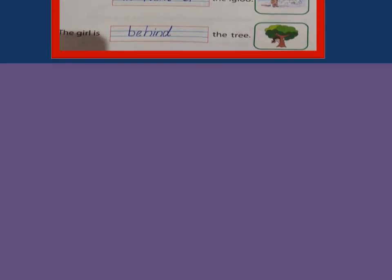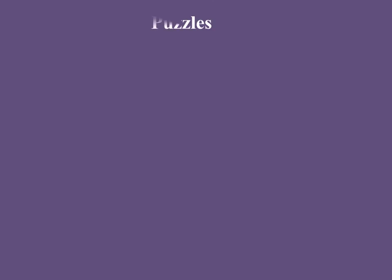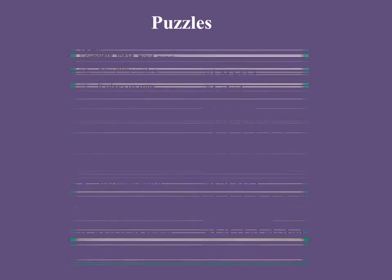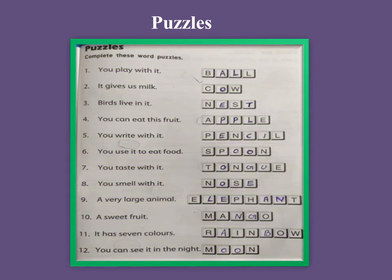Now let us see about puzzles. Here you can see 12 questions — the answers should be written in the columns. Let us see the answers. You play with it — ball. It gives us milk — cow. Birds live in it — nest. You can eat this fruit — the letters A and E are given with three gaps in between, so the fruit's name is apple.